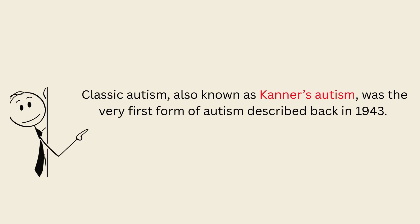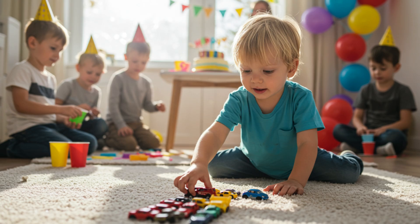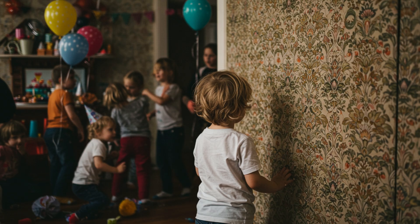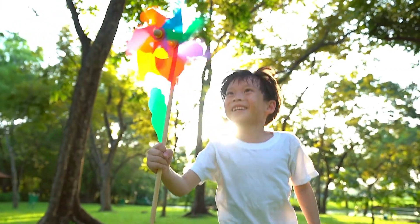Classic autism, also known as Kanner's autism, was the very first form of autism described back in 1943. Picture a child at a busy birthday party. While most kids are playing together or chatting, this child might be lining up toy cars in a perfect order, repeating their favorite movie lines word for word, or focusing intently on the pattern in the wallpaper. It's not about being odd — it's simply a different way of experiencing the world.